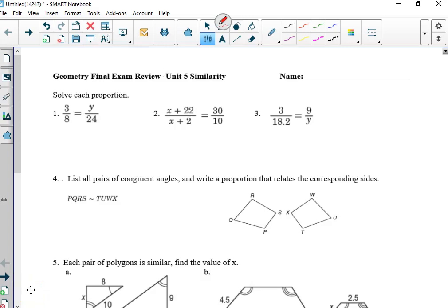Okay, unit 5 review. Solve the proportion for 1, 2, and 3. When we do that, we're going to cross multiply.